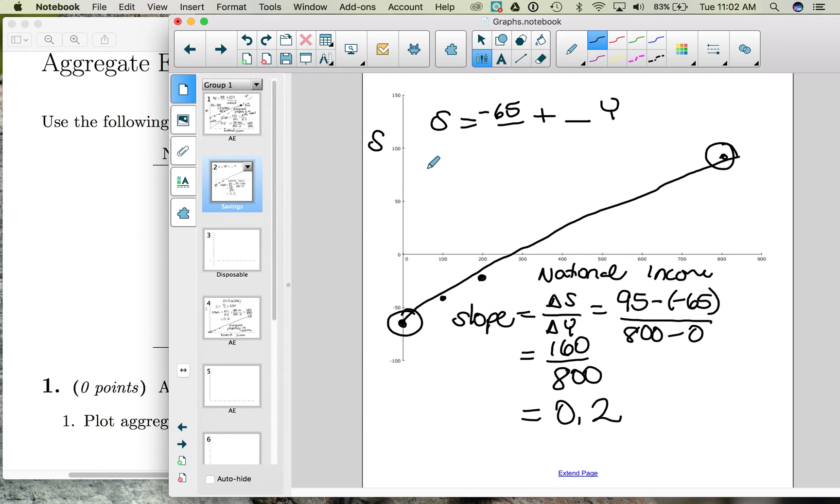This slope has a name. It is called the marginal propensity to save. And what it tells us is for every additional dollar of income, we save 20 cents.